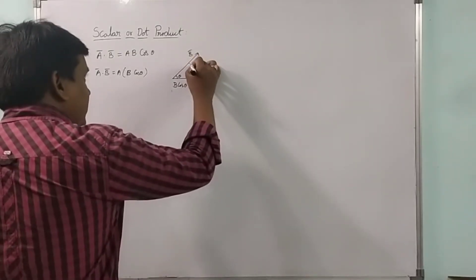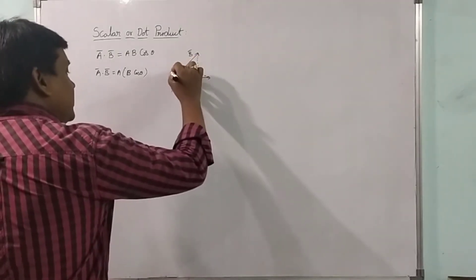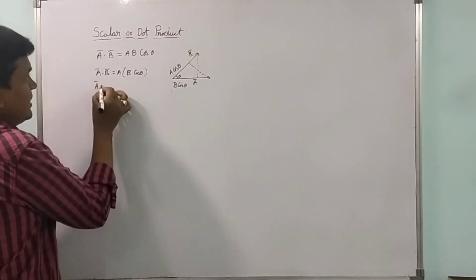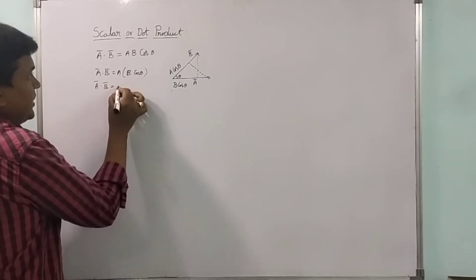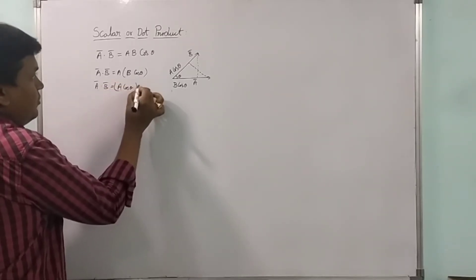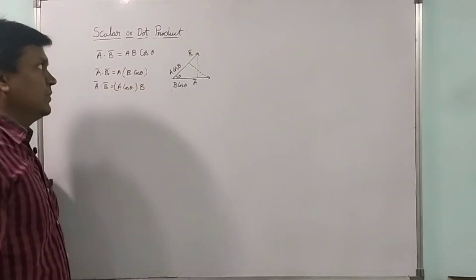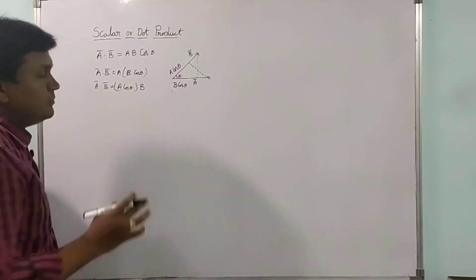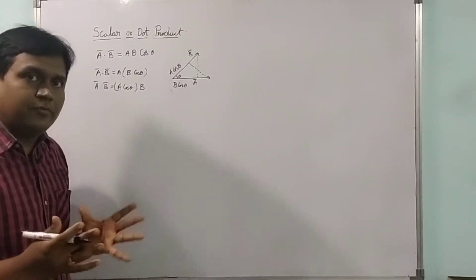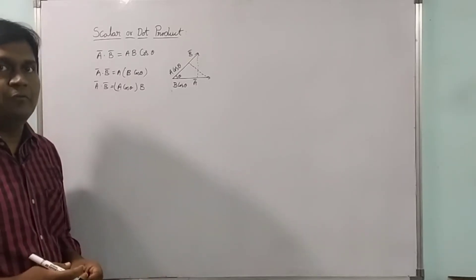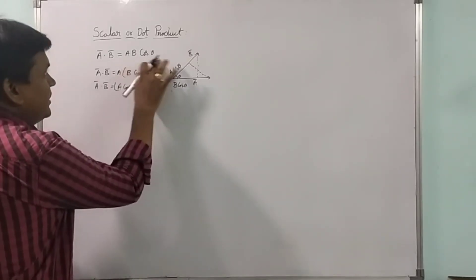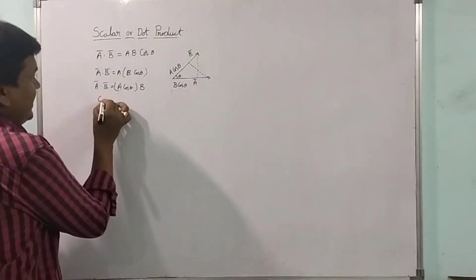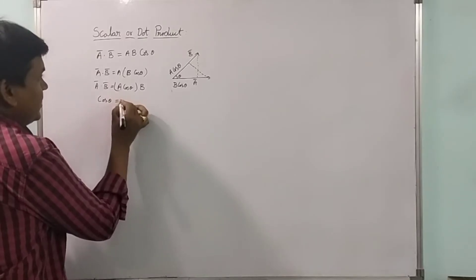In the same way, if I draw a perpendicular from b, this will be a·cos(θ), and we can write a-bar dot b-bar equals (a·cos θ)·b. So the dot product gives the magnitude of one vector times the projection of the other. To get the angle, cos(θ) equals a-bar dot b-bar divided by a·b.